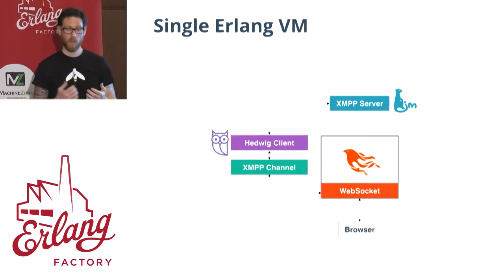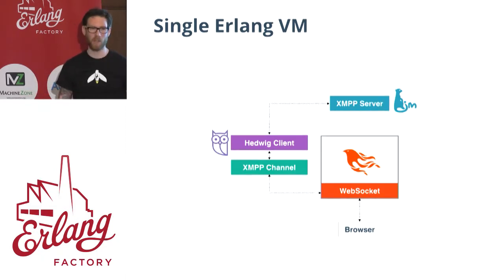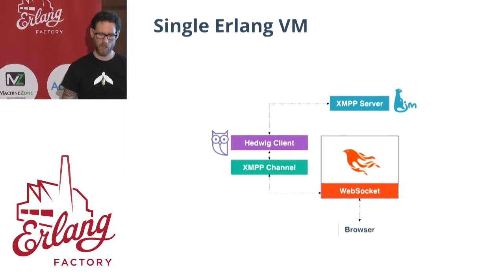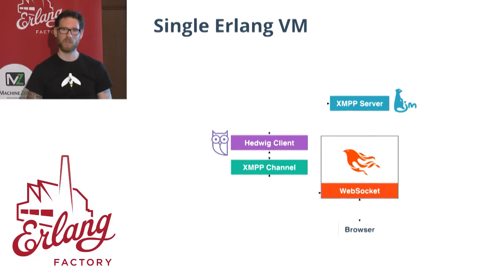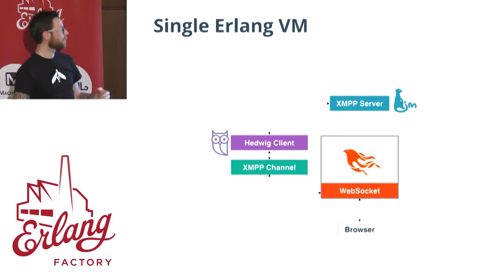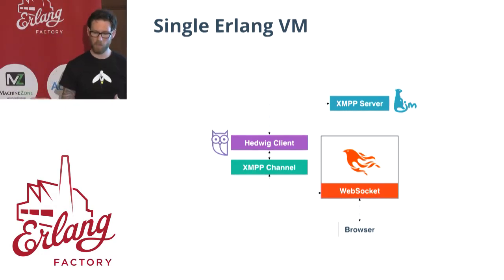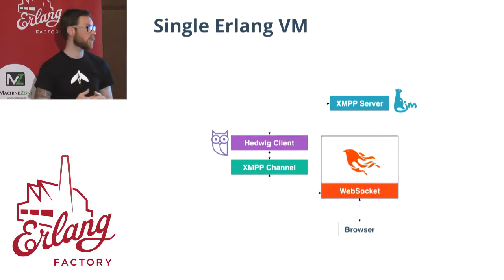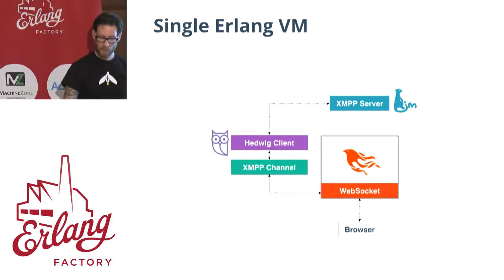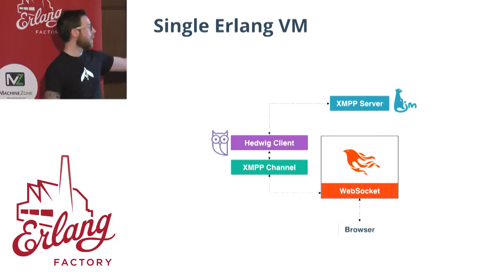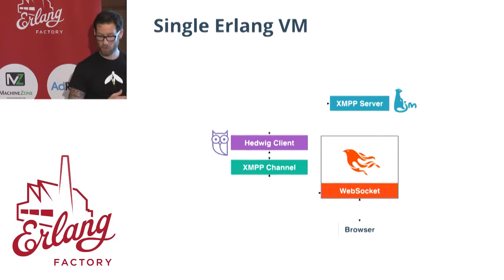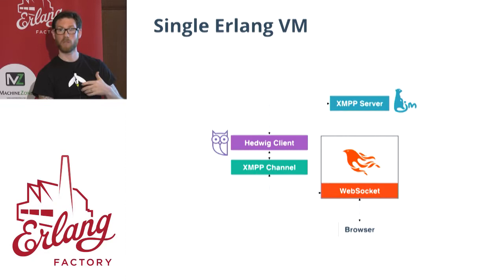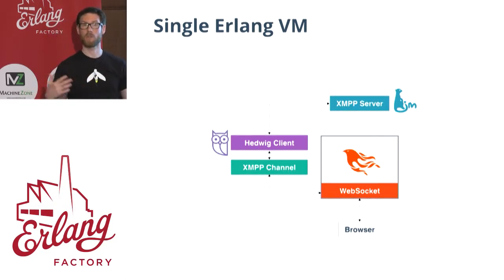There are so many different ways you can set up these systems. Michal and I have been talking about all these different use cases and scenarios, trying to figure out the best way to do this. What I have is everything running in a single VM. MongooseIM can be installed as a dependency because it's an OTP-compliant application, so I can just install it as a dependency in my Elixir application. Hedwig can actually call directly using Erlang to talk to the XMPP server. You could do registration of users — provide a form on your web page that allows people to sign up with their username and password, which goes and registers directly into the server.